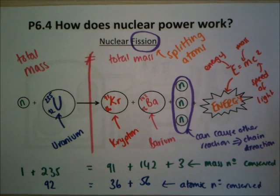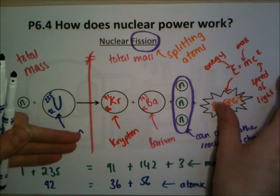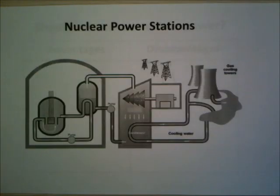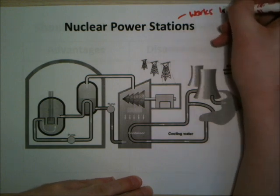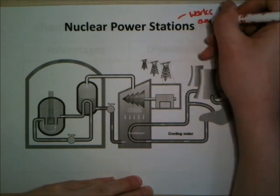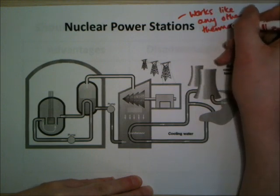This is the process of fission and how nuclear power works — it can happen for other elements, but for nuclear power we use uranium. A nuclear power station works basically like any other thermal power station, except for one thing: how the water is heated.